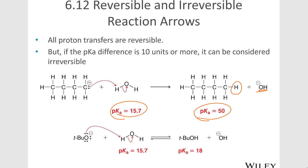But when we go down to the next reaction, we have t-butoxide pulling the hydrogen off of water. We have a pKa of 15.7 versus 18 on the t-butyl alcohol. That's not a big pKa difference. So we can actually see a reversible reaction there.